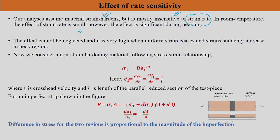Now let us assume a material which is non-strain-hardening but follows the strain rate flow stress model: σ₁ = b·ε̇₁^m, where m is called the strain rate sensitivity index. The strain hardening exponent n is not in this equation. Here b is a fit constant, analogous to k in the Hollomon power law equation.